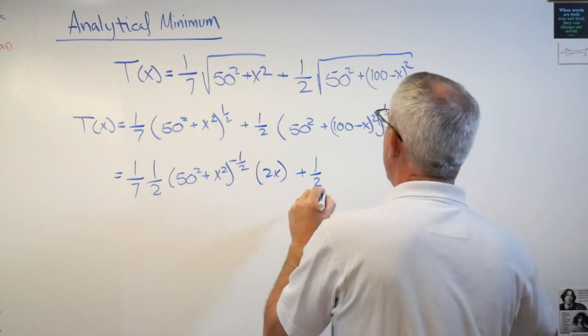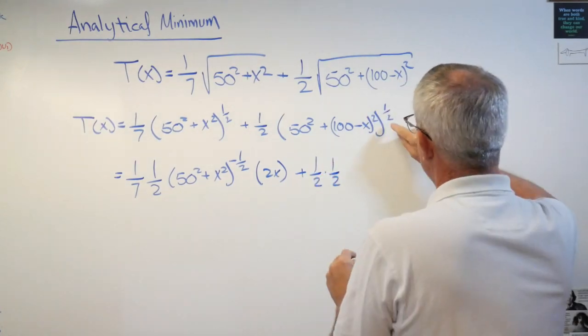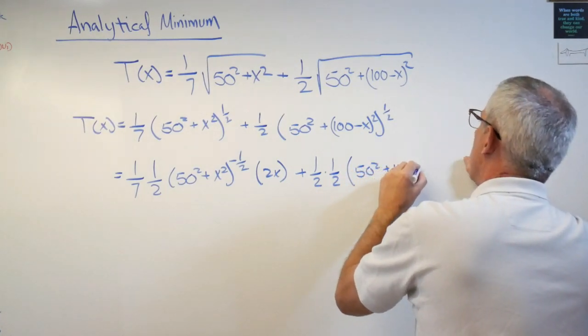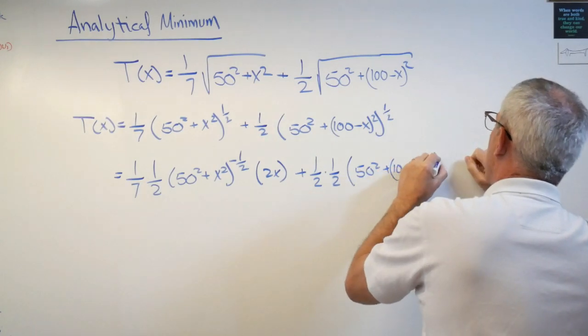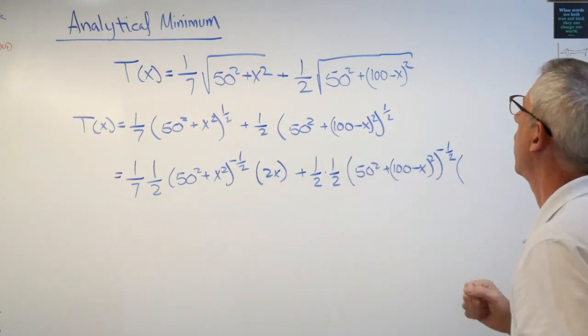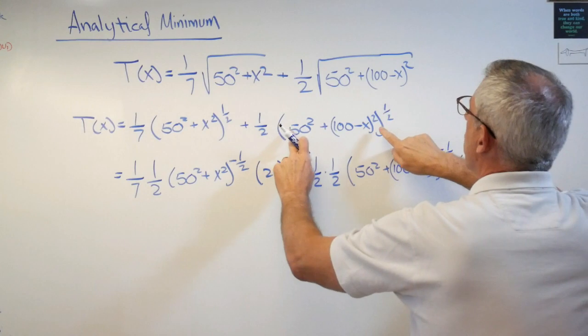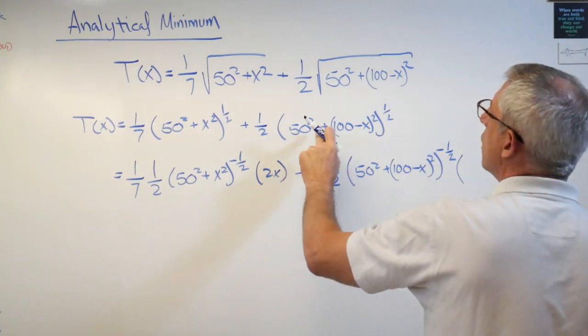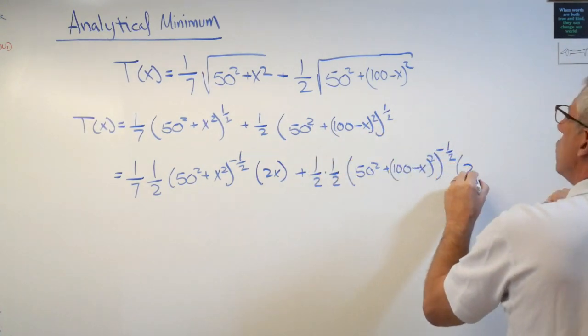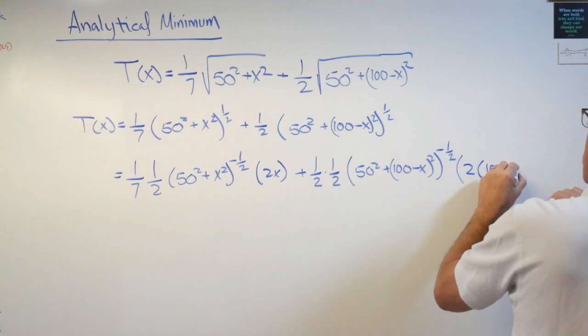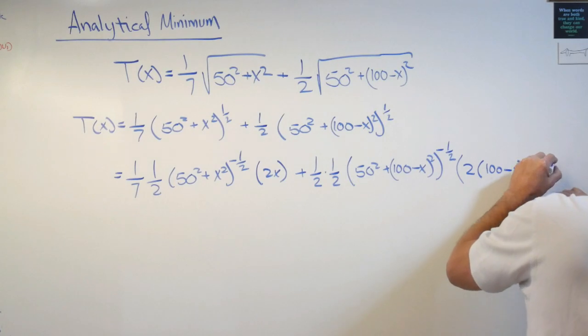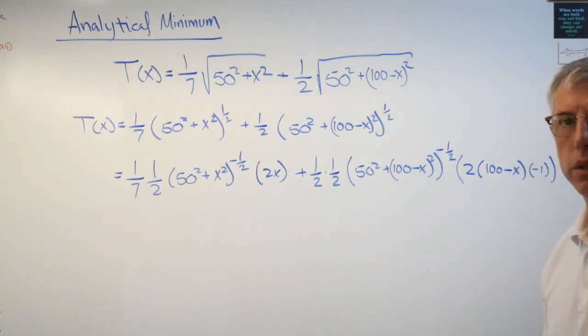And then I have to take the derivative of whatever's inside those parentheses. The derivative of a constant is zero. Derivative of that is two x. Now let's do the same thing again. Now times one-half, because I'm pulling that down. And I still have to take the derivative of what's inside the parenthesis right there. Derivative of fifty squared is zero. And the derivative of a hundred minus x squared is two, one hundred minus x. Now I have to take the derivative of that. Derivative of minus x is minus one.